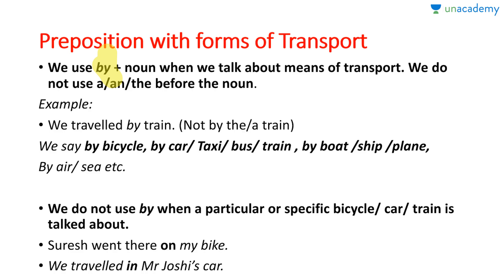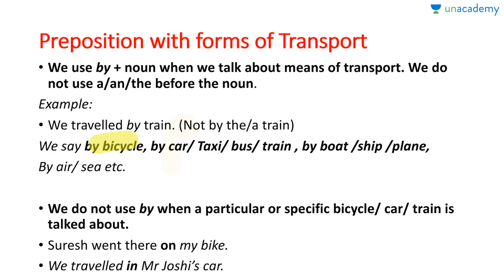The catch here is that all these transports must be common nouns. By bicycle, car, taxi, train — it should be a common noun, not a proper noun. If you name a specific taxi company, it becomes a proper noun. If you say 'my car', since the car belongs to you, it becomes a proper noun. Similarly, 'my friend's car' or 'my friend's bicycle' also becomes a proper noun. So this rule — 'by' plus noun, no article — only applies when the noun is a common noun.